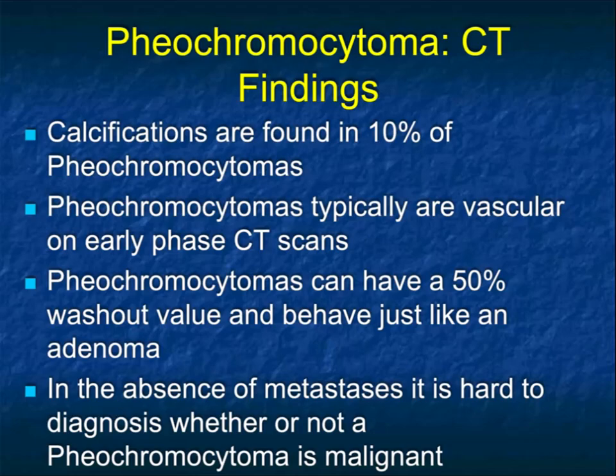About 10% of pheos will have calcification. Coarse calcification can be seen in primary adrenal cortical carcinomas, and punctate calcifications in myelolipomas. Pheos are typically vascular on arterial and venous phase imaging. Pheos can have a prominent washout value of 50 to 70%, so you need to be very careful. To call a pheo malignant, you typically need to see metastasis.